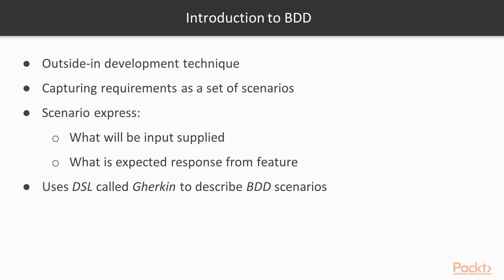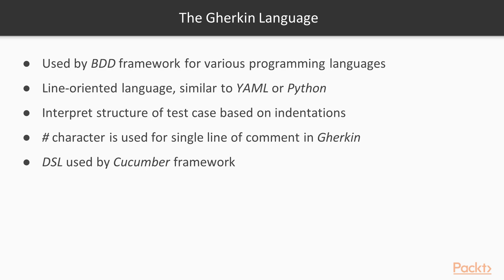The best part of BDD is that it uses a domain-specific language called Gherkin to describe the BDD scenarios. Gherkin is the universal language used by every BDD framework for various programming languages that enjoy BDD support. Gherkin is a line-oriented language, similar to YAML or Python. Gherkin will interpret the structure of the test case based on indentations. The hash character is used for a single line of comment in Gherkin. Gherkin is a DSL used by the Cucumber framework.